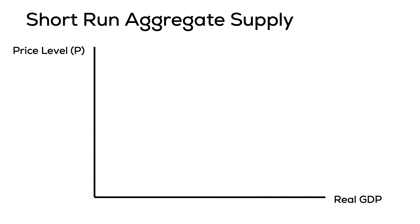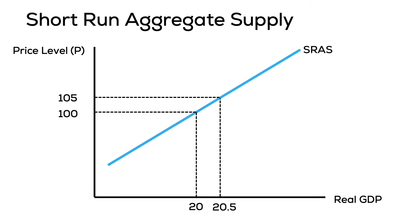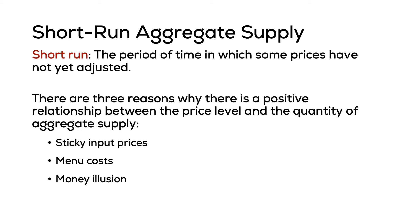The relationship between firms' production and the price level in the short run is positive. This means that as the price level increases, firms will increase the quantity supplied in real terms. When price levels fall, the quantity supplied decreases. This movement along the short run aggregate supply curve can be explained using three reasons: sticky input prices, menu costs, and money illusion.